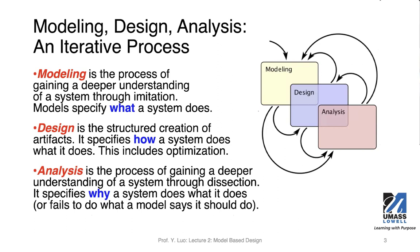Last week we talked about modeling, design, and analysis. As shown in this diagram, these three stages form an iterative process. Modeling is the process of gaining a deeper understanding of the system through imitation. When we are given a problem or implementation or solution to design, we are faced with actual applications with different requirements in terms of functionality and performance metrics. Modeling in this context is trying to understand the cyber-physical system that we are trying to design and build.